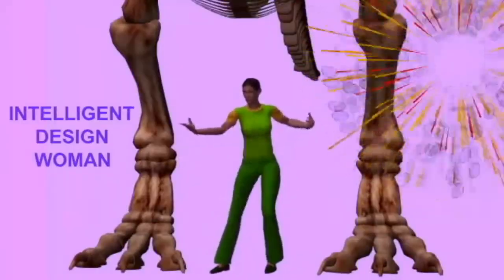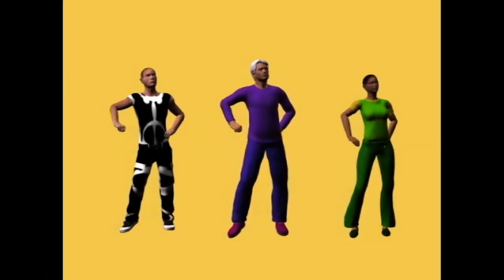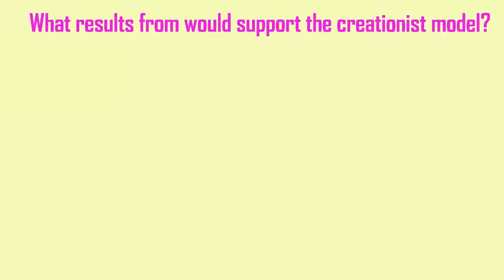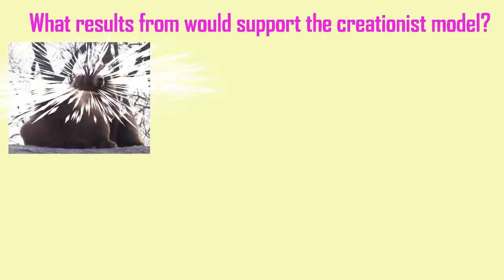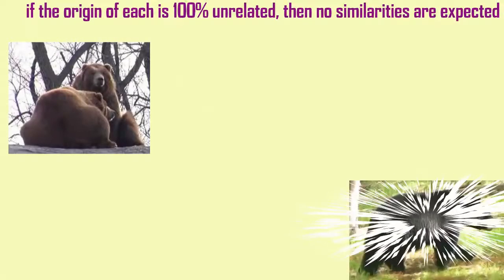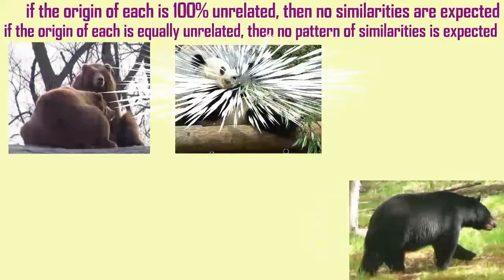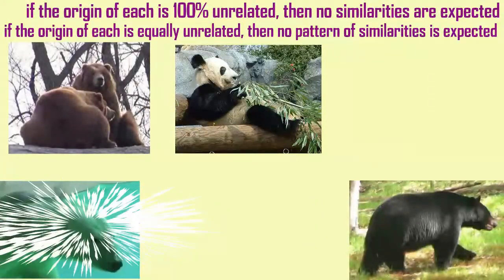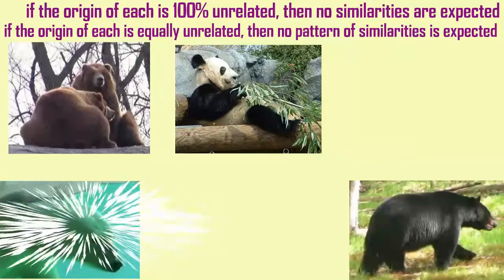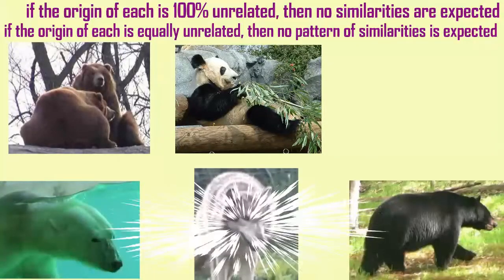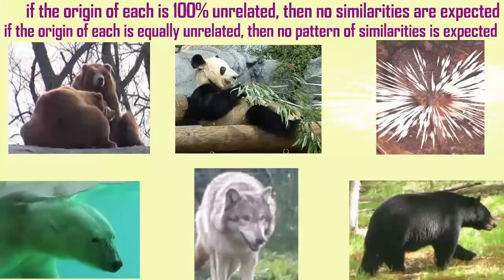But one should then test these models. The creation model holds that all organisms which are not in a 'kind' are unrelated to each other — that at some point, perhaps not the too distant past, all organisms appeared, and that this was a sudden supernatural event, not a gradual biological change.